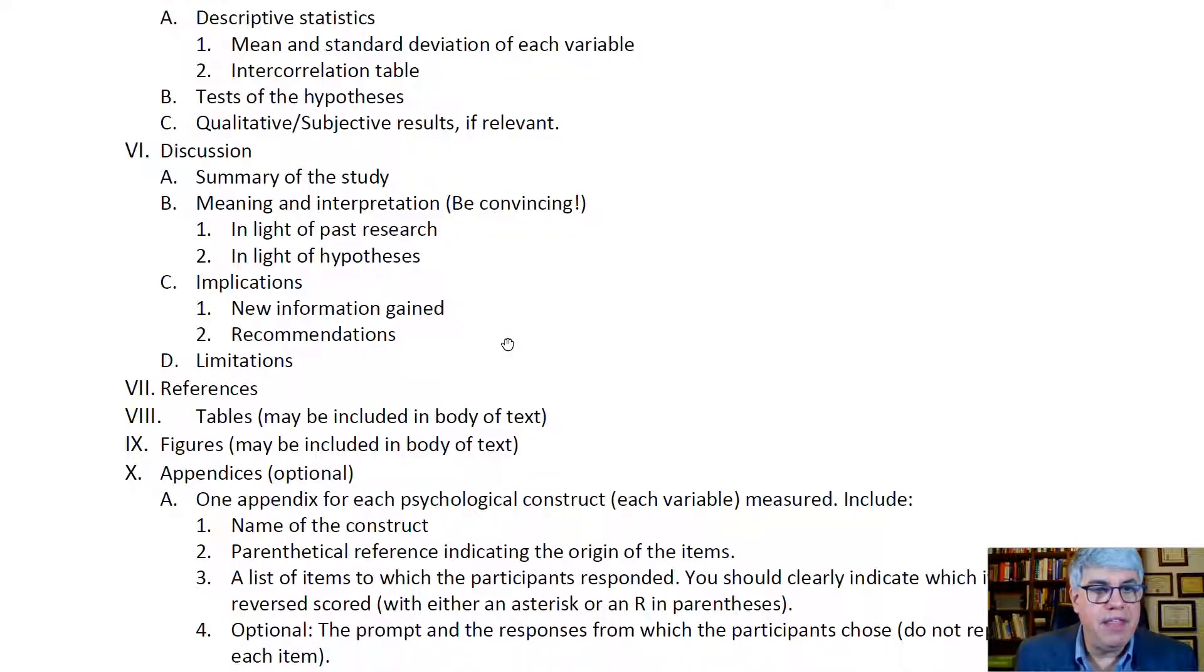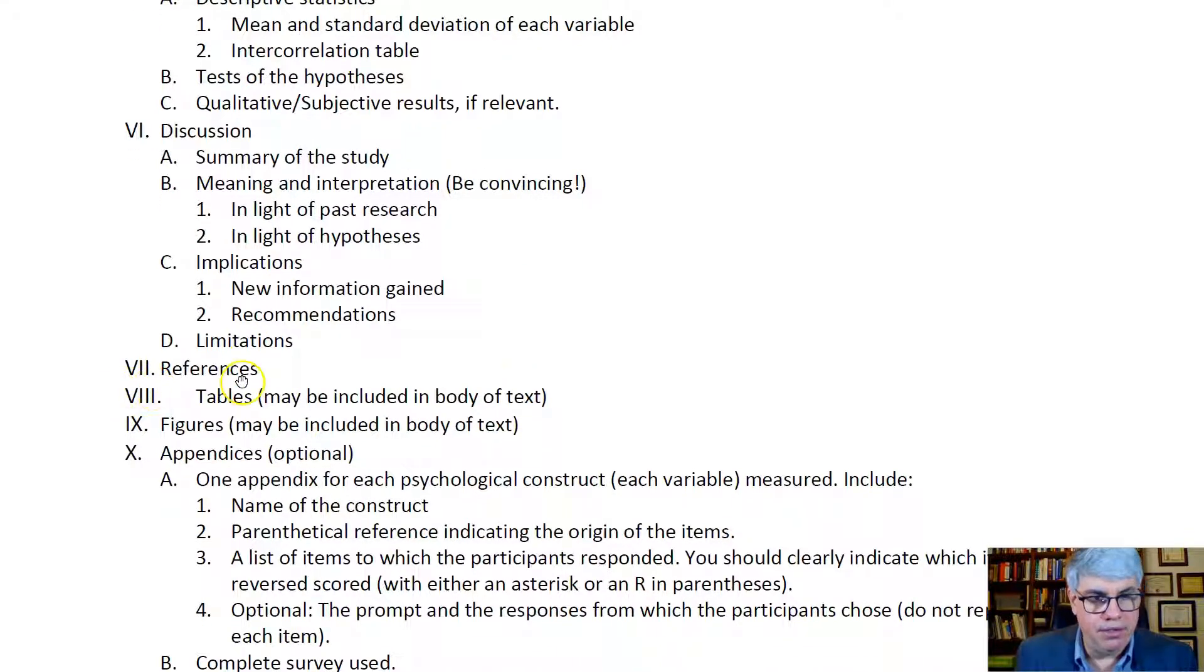Then you have a references section, and you only include the references that have been included in the main parts. You have the tables and the figures. It used to be that the tables and figures had to go at the end of a paper in an APA formatted paper. Now they don't. You can include them in the body of the text, and that makes it easier to read.